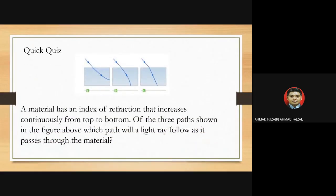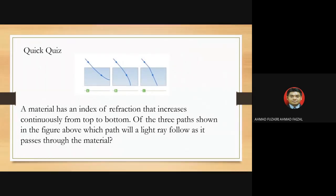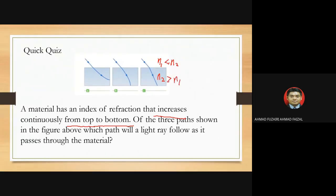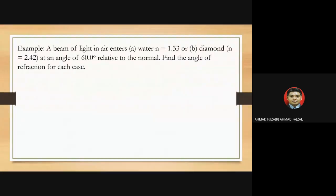Quick quiz: a material has an index of refraction that increases continuously from top to bottom along three paths A, B, and C. Which path will a light ray follow as it passes through the material? Since the index of refraction increases from top to bottom — n1 is less than n2 — the correct path is C.